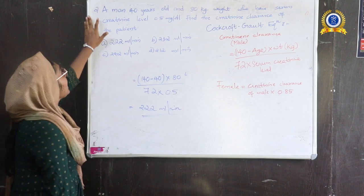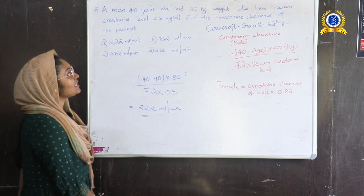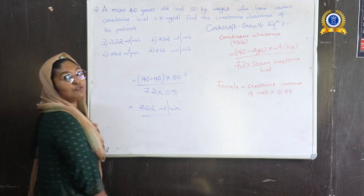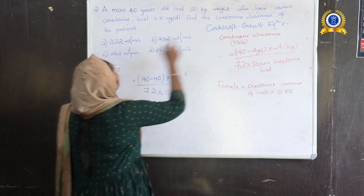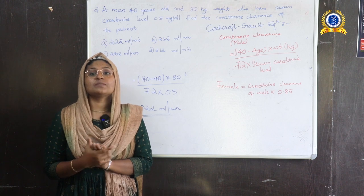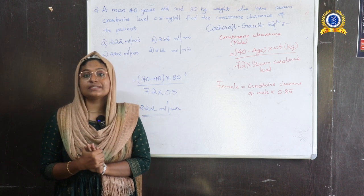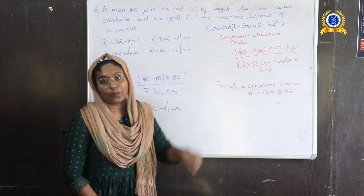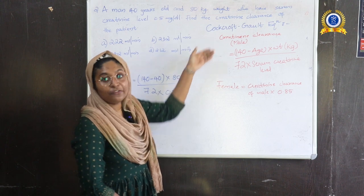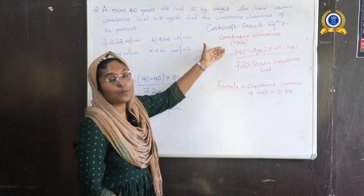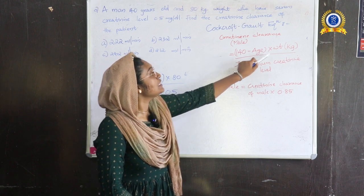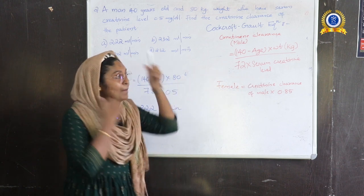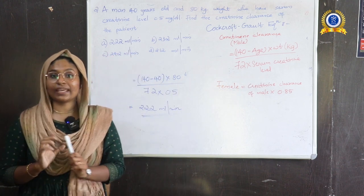Question number 2: A man, 40 years old and 80 kg in weight, has a serum creatinine level of 0.5 mg per deciliter. We have to find the creatinine clearance of the patient. We use the Cockcroft-Gault equation.